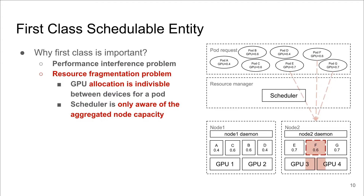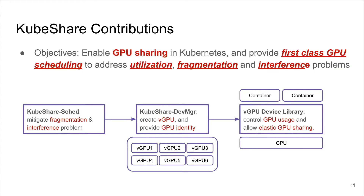The second problem is resource fragmentation. GPU sharing can cause fractional residual capacity, but the scheduler is only aware of the aggregated resource capacity of a node, not of the individual devices. Therefore, GPU sharing can cause invalid scheduling decisions in Kubernetes. For example, the residual capacity on node 2 may be enough to host a pod, but if that pod requests a GPU with 0.6 capacity, it cannot obtain sufficient resources from either GPU 3 or GPU 4. Hence, resource fragmentation must be considered by the scheduler to support GPU sharing.